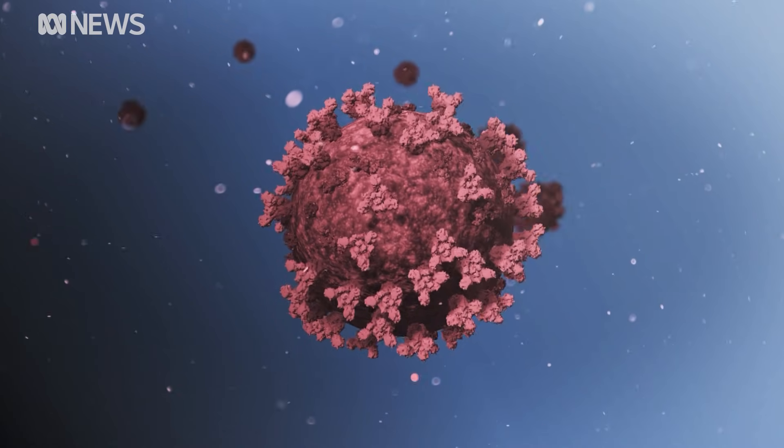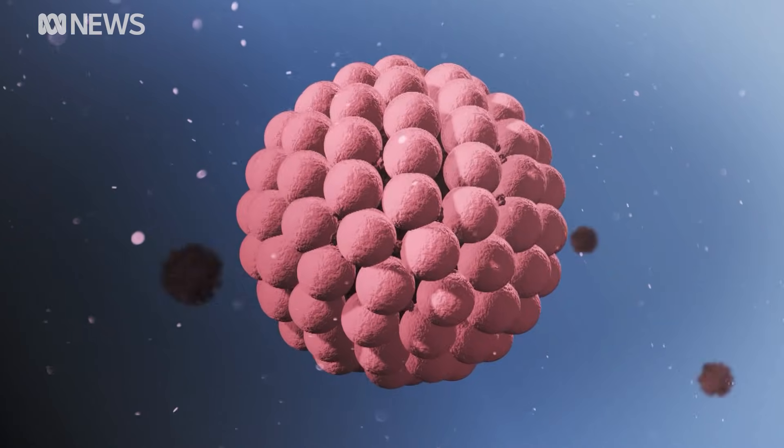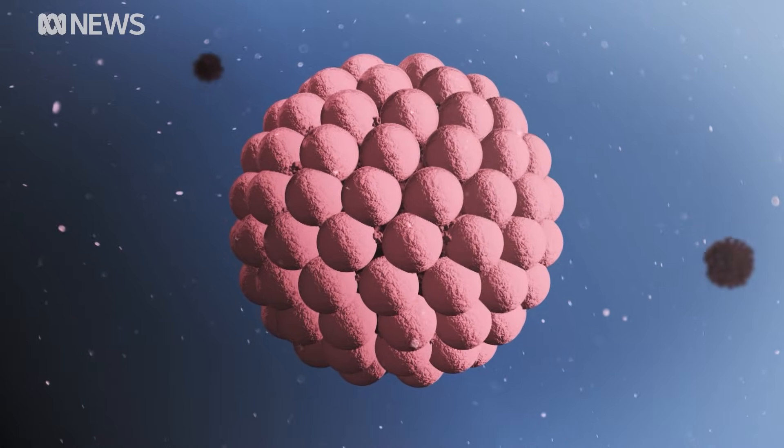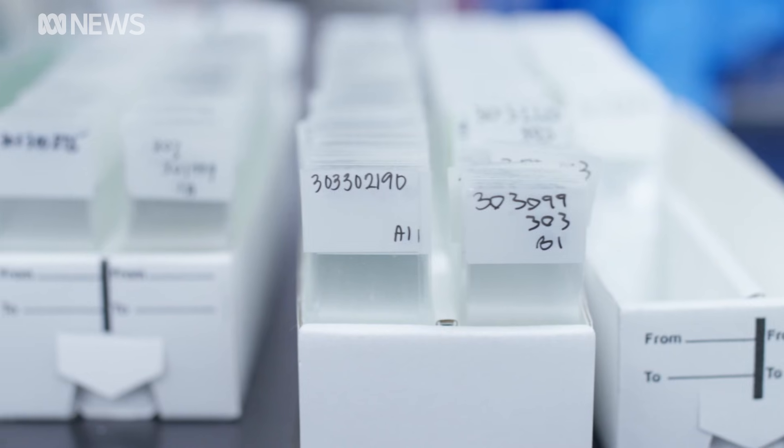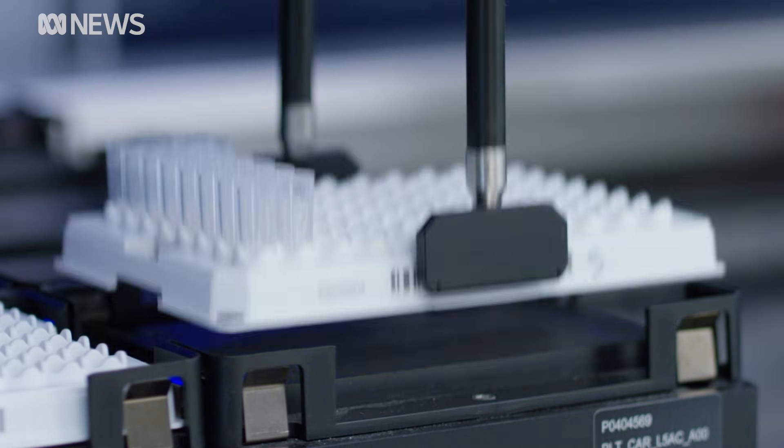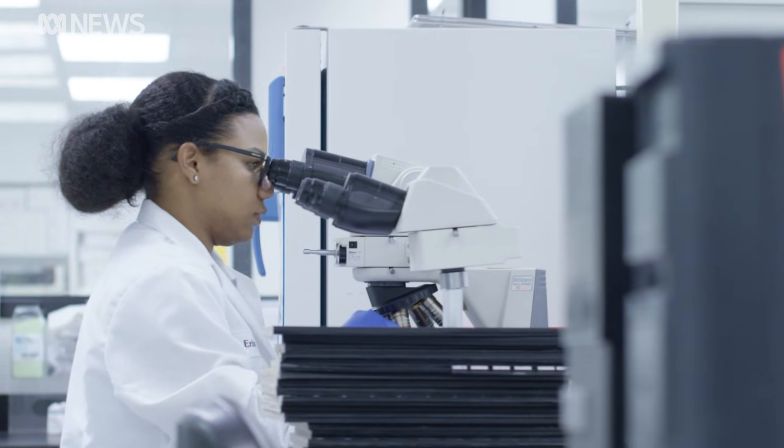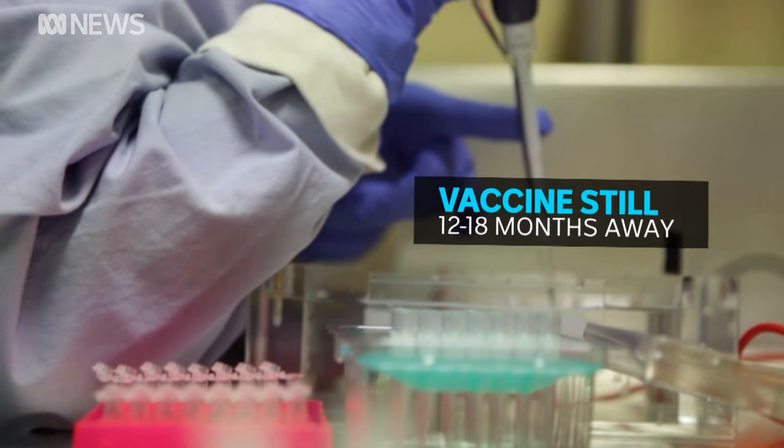Those antibodies would cover the spikes, incapacitating the virus and prevent it from piercing healthy cells. That's the hope. It's just one of about 30 trials underway around the world right now. But most researchers agree a vaccine is still 12 to 18 months away.